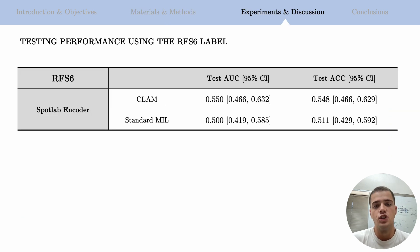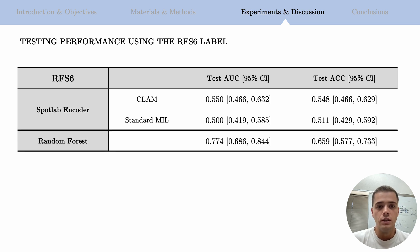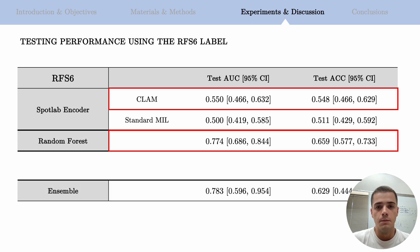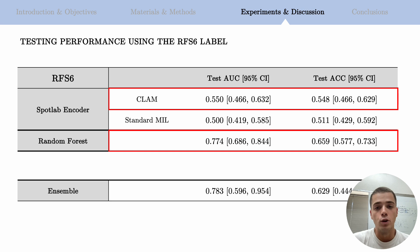Now let's talk about the results. We can observe on the screen that the ensemble model outperformed both individual models — the image-based and the multivariable ones — in terms of test area under the curve. This demonstrated the potential of integrating multimodal data to improve prognostic predictions in acute myeloid leukemia.